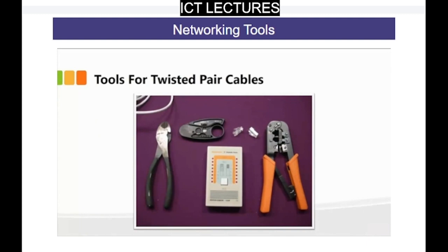Some of the basic tools for twisted pair cables, whether UTP or STP, are displayed. We have the crimper, the wire cutter, the cable tester, and of course the wire stripper as well. These are the basic tools that are required if you need to make cables.